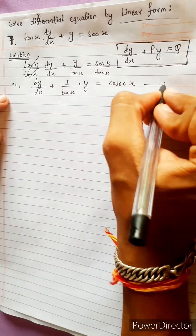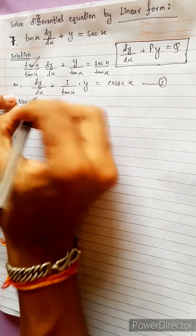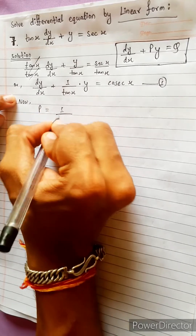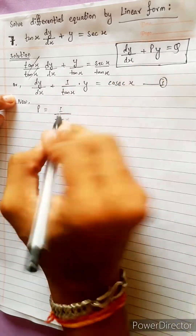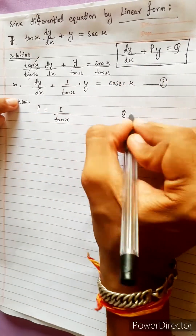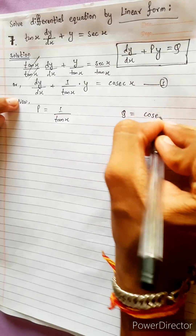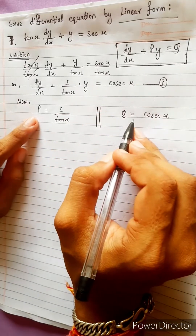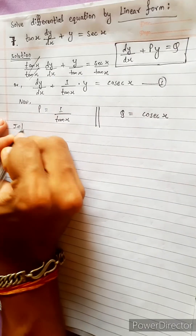Now compare. P equals 1/10x — that is the value of P. Q equals cos x — that is the value of Q. Now find the integrating factor using the value of P.